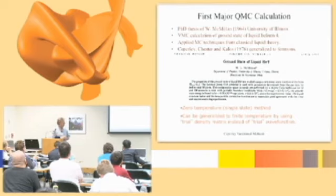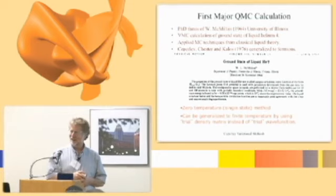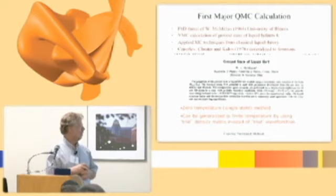A graduate student named Bill McMillan, who happened to have John Bardeen as an advisor, wrote this paper. John Bardeen didn't put his name on the paper. It's a graduate student's PhD thesis. The paper was sent in November of 1964. So you can imagine what the computer was like in around 1963.